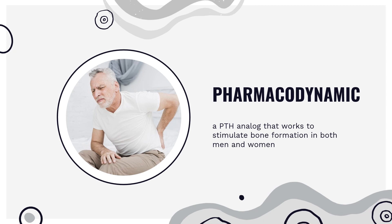Pharmacodynamics. Teriparatide is a PTH analog that works to stimulate bone formation in both men and women. It increases skeletal mass, increases markers of bone formation such as bone-specific alkaline phosphatase (BSAP) and procollagen I carboxy-terminal propeptide (PICP), and increases bone strength.